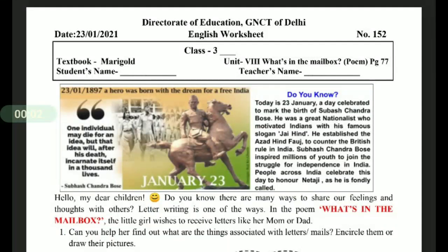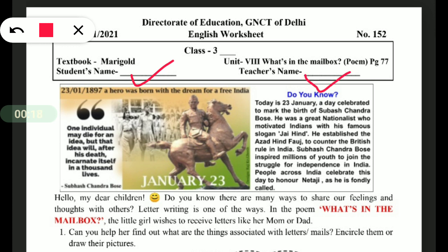Good morning dear students. This is worksheet number 152 of the Marygold book, unit 8 — 'What's in the Mailbox?' — a poem. Don't forget to write your name and your teacher's name. Okay students, let us start.